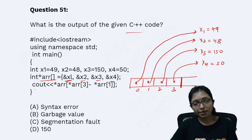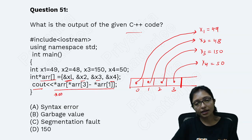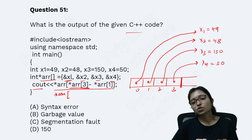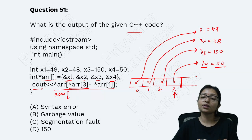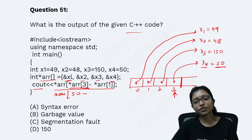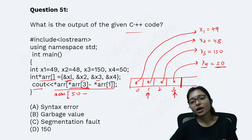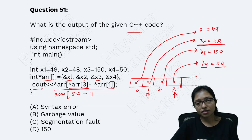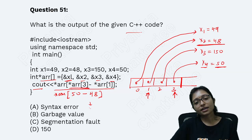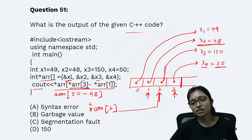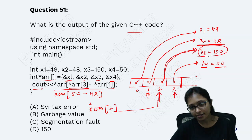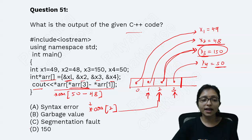Now what are we doing here? We are printing star ARR. Star A3 — in A3 position, what are we storing? That is 50. Star A3 means the value of A3, which is 50. Minus A1, which is 48. So it is ultimately star ARR 2. What is the value there? That is X3, which is 150. That is why the answer is 150.